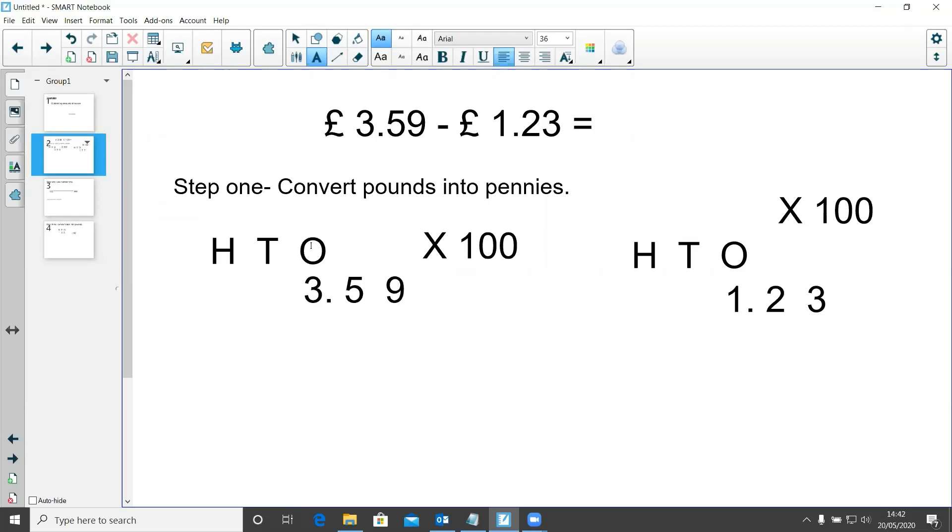Now to convert pounds into pennies, I need to times by 100, which means that my amount here is going to move two places to the left. It's going to move two places because I have two zeros. I'm making it two times bigger, so my three is going to jump one, two places, my five is going to jump one, two places, and the nine one, two. So if I move my number over, it becomes 359p because I have converted it from pounds to pennies.